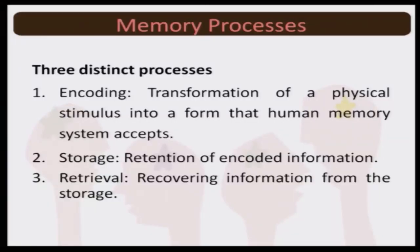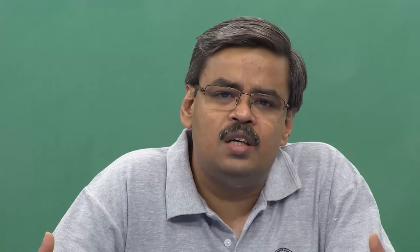From that perspective, memory has three distinct processes: encoding, storage, and retrieval. Encoding is the process of transformation of a physical stimulus into a form that human memory accepts. If I am looking at the camera right now, I have some idea of what type of function this form performs, and based on this utility or form I create an impression. I know that if I see an object like this, what it should be called, and if I need a certain function performed, what instrument I would need.